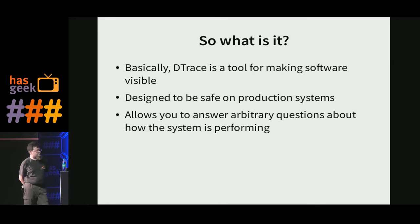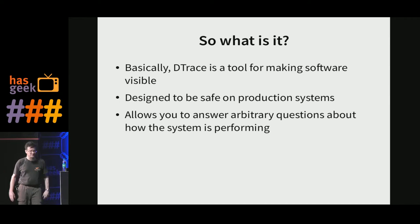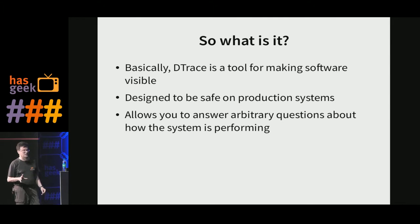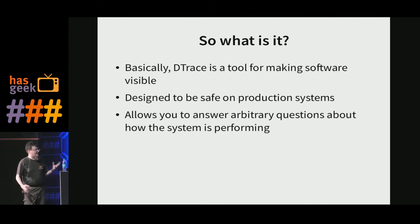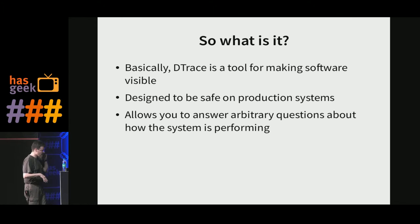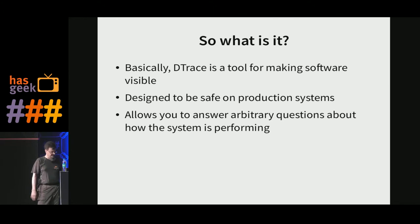So what is this thing? DTrace takes your running code — whether in the kernel or userland — which normally runs invisibly, and makes it visible to you. It basically lets you have X-ray vision into what the computer is doing at any given time. You can ask DTrace to tell you whenever a certain piece of code is run, and you can ask questions about the circumstances of what happened to lead to that. It allows you to ask: when is this happening, how many times, what else was happening, what caused it? And it allows you to do this while it's happening, which is what makes it really useful.